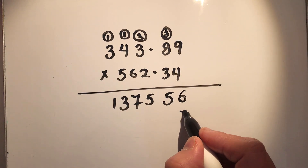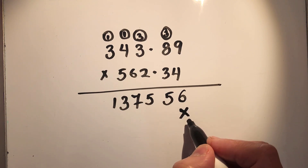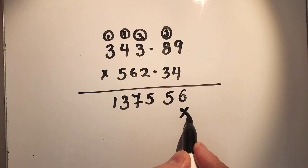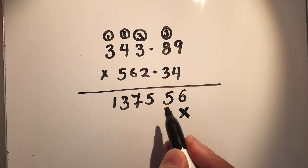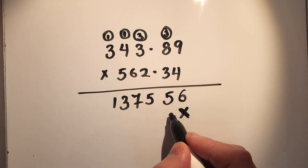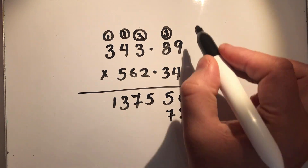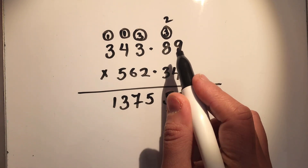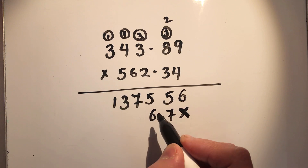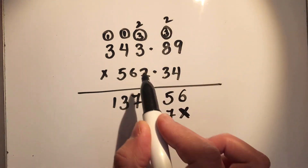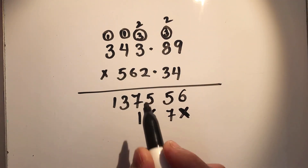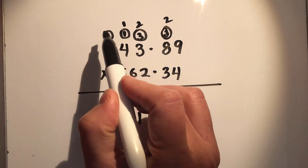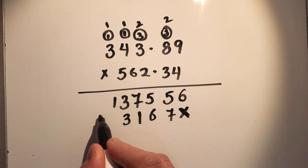Next number is 3. Here we will not put the number because we are multiplying with the tens place number, so we will write a zero here. Then we start with the next digit: 3 times 9 is 27, so 7 and 2 on top. 3 times 8 is 24, plus 2 is 26, 2 carry over. 3 times 3 is 9, 10, 11, 1 carry over. 3 times 4 is 12 plus 1 is 13, 1 carry over. 3 times 3 is 9 plus 1 is 10.